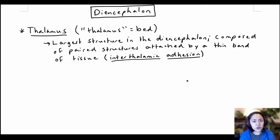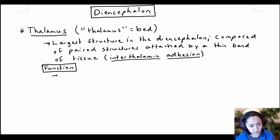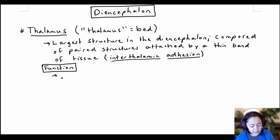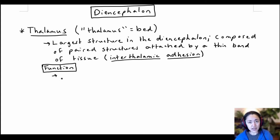Now let's look at the function of the thalamus. One of the main functions of the thalamus is to relay all conscious sensory information to the primary sensory cortices, except smell.